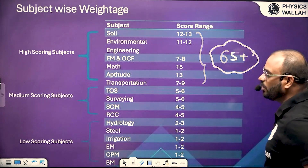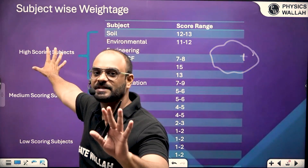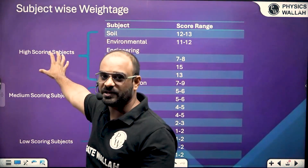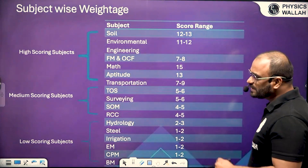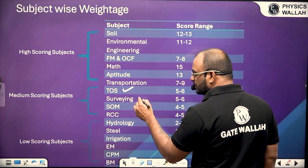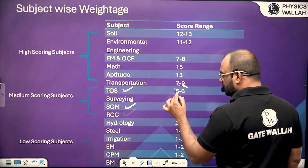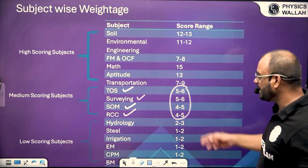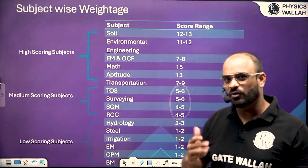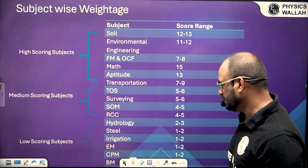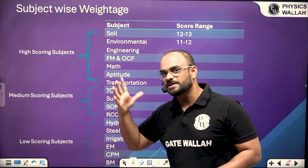In the medium scoring subject category, we have theory of structure, surveying, strength of material, and RCC. Their weightages are 5 to 6, 5 to 6, 4 to 5, and 4 to 5 marks respectively. If you take the summation, it is approximately 20 marks.